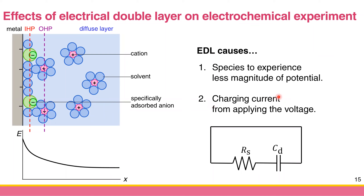This charging generates what is called the charging current. You have a lot of ions, and when you apply positive or negative charge to the electrode, these ions have to rearrange themselves. The movement of these ions — the movement of charge — is basically current. This current is called charging current. So these are the two effects of the electrical double layer: first, your species will experience less potential magnitude than you apply; second, it contributes to a charging current when voltage is applied.